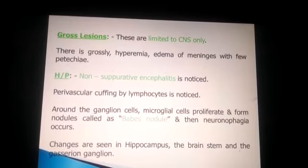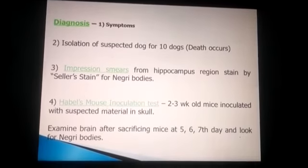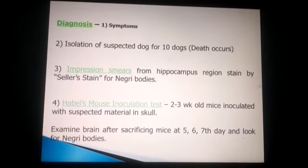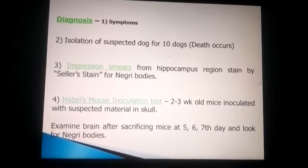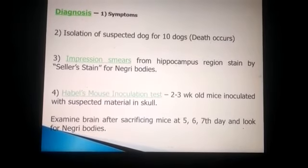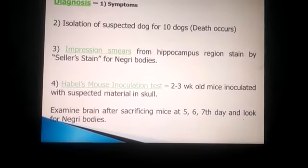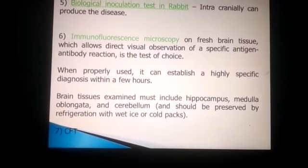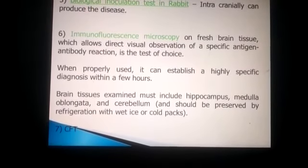Gross lesions include hyperemia and edema of the meninges, and a few petechial hemorrhages. On histopathology, there are changes in the hippocampus. For diagnosis, clinical symptoms are assessed and the animal is isolated. A mouse inoculation test is also available as a diagnostic tool.